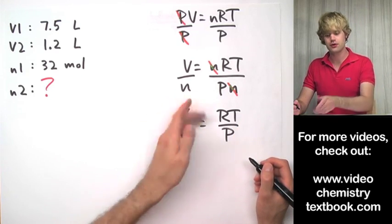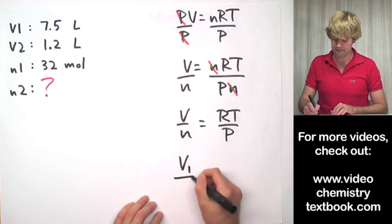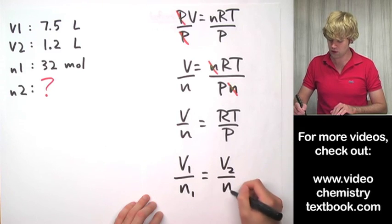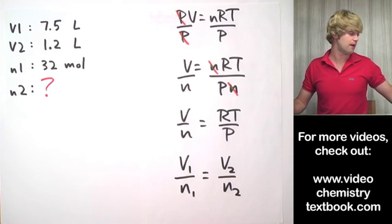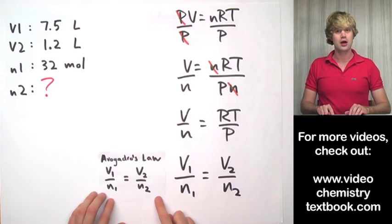I have this guy by itself. So let me double it before and after both sides of the equal sign. V1 over n1 equals V2 over n2. And what I did there was I came up with Avogadro's law.